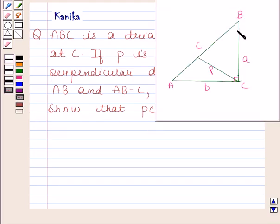Now this is the figure of this question. We are given a triangle ABC which is right angled at C. P is the length of perpendicular. AB is equal to C, AC is equal to B, and BC is equal to A. We have to show that P into C is equal to A into B.